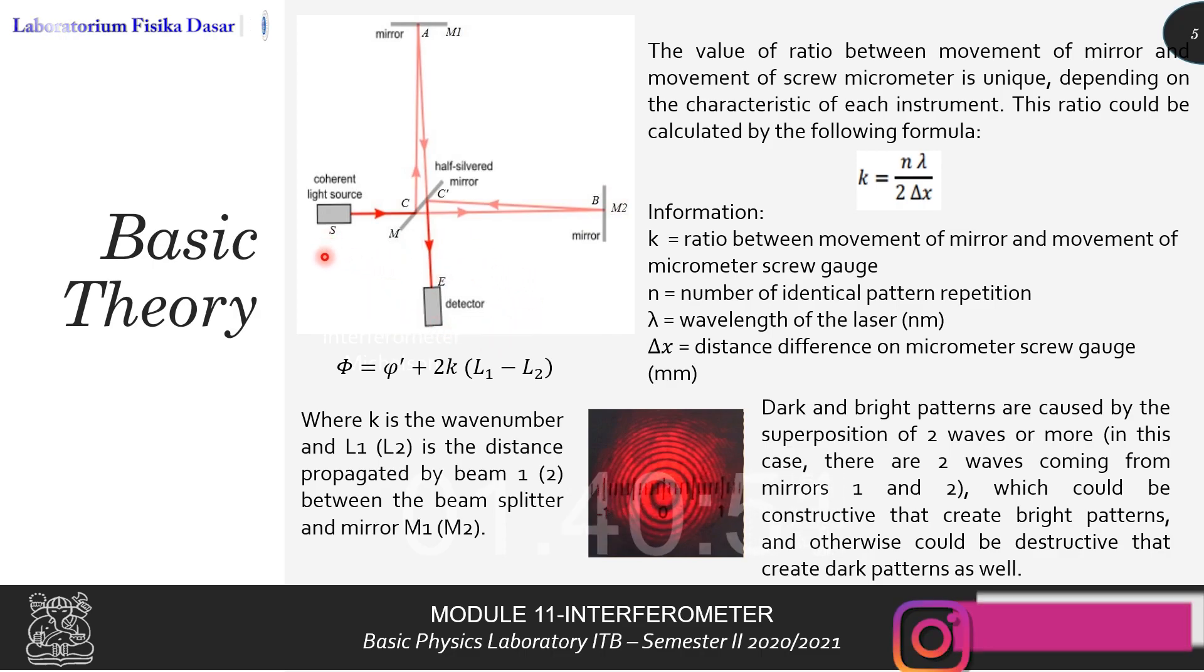The light source will emit light waves that will travel to the beam splitter. The beam splitter will then split this into two different light waves that will be propagated to mirror one and mirror two, respectively. Both light waves will be reflected and come back to the beam splitter to then be superpositioned and be shown in the detector or the screen.